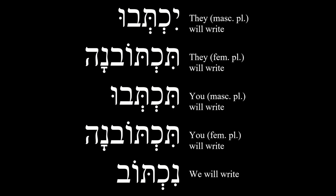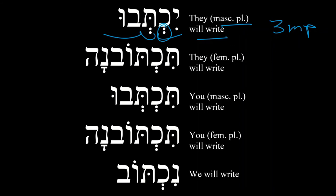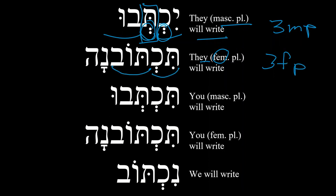Now let's go ahead and look at the plural. If we wanted to say 'they,' masculine plural (3MP), will write, we would say yiktevu. Notice again the shevas here: the one on the right-hand side is the silent sheva, and the one on the left-hand side is vocalizing — giving us that quick syllable with the sound of the consonant. So you have yiktevu — they will write. If we want to say 'they,' feminine (3FP), we would say tiktouna.